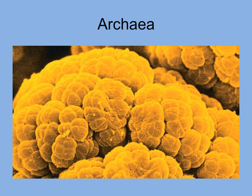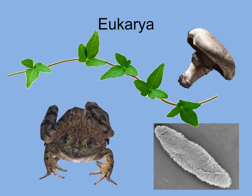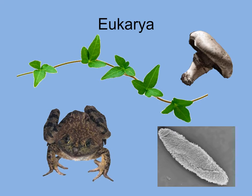The prokaryotes known as archaea live alongside bacteria in boiling hot springs and intestines; however, archaea are very different — only a few pathogenic archaea have been found. And last but not least, eukarya: other than bacteria and archaea, all other organisms are composed of eukaryotic cells. All plants, fungi, animals, and protists are in the domain eukarya.